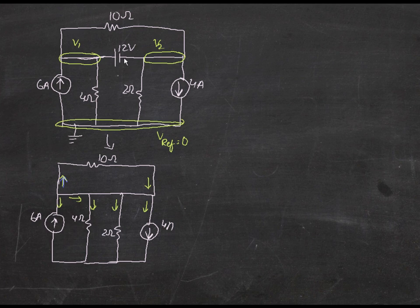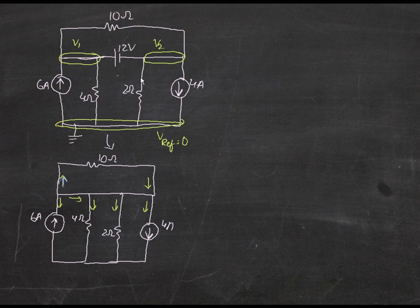The only way you would identify that you have to apply supernode analysis is if you have a voltage source that's interfering with KCL. You always try to find the sum of currents entering equals the sum of currents leaving, but a voltage source does not have any current — it just gives out a voltage, not a current, and there's no resistance. If there was a resistance, you could find I equals V over R, but since it's just a voltage source, you can't apply the conventional KCL rule.